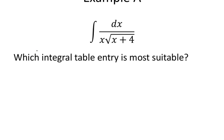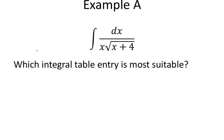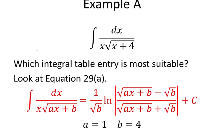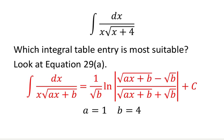These can be actually used as a quick reference for solving them without having to re-derive these. So here's an example: dx over x√(x+4). This one would be difficult to solve by hand unless you've recently solved one of these before. Chances are you don't have the procedure memorized, and most people wouldn't. So you would look it up in an integral table. Which table entry is the most suitable? The equation 29a provides this integral.